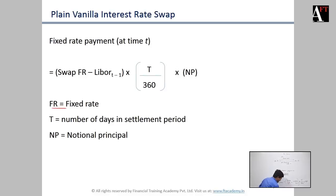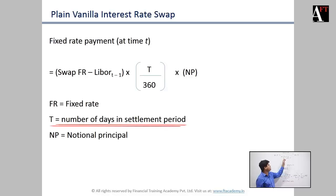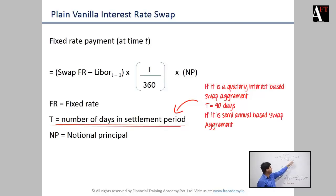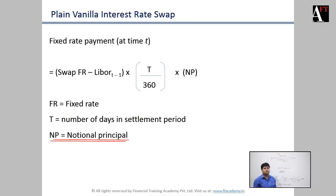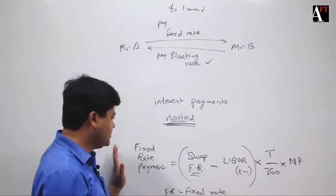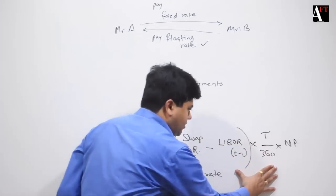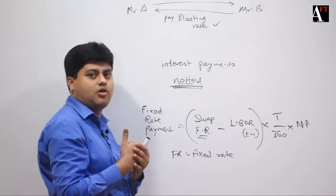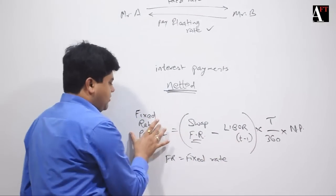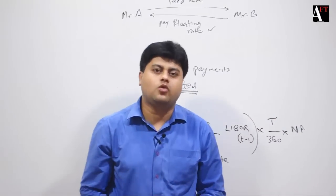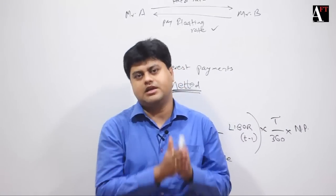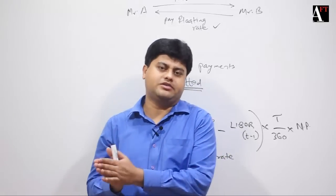Here, FR is the fixed decided rate for the fixed rate payment party. T is the number of days in the settlement period — 90 days for a quarterly settlement swap, or 180 days for a semi-annual swap agreement. NP is the notional principal. If this net amount comes out negative, the fixed rate payment party will receive the net amount. If positive, the fixed rate payment party will pay this amount to the floating rate party. That is the explanation of the plain vanilla interest rate swap agreement.